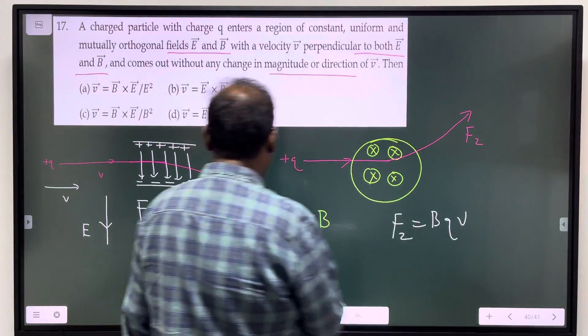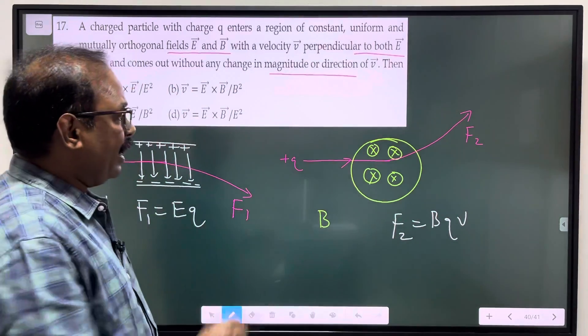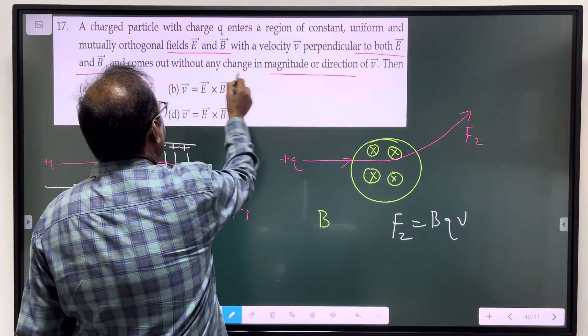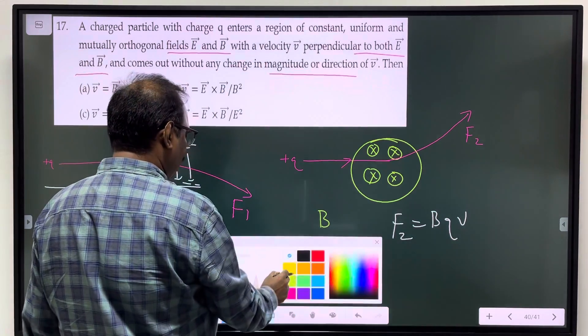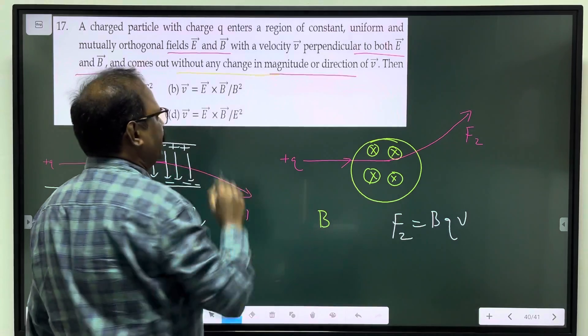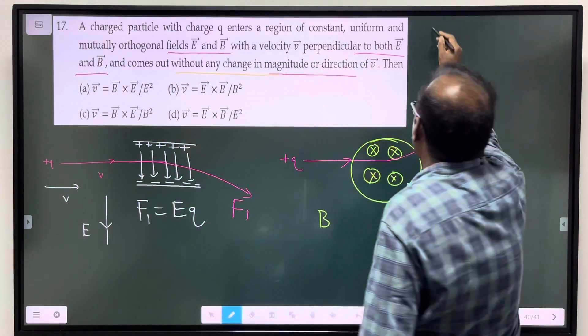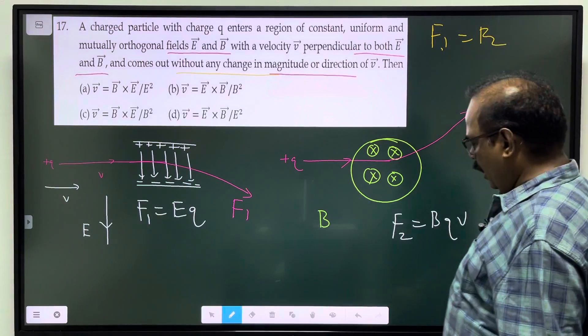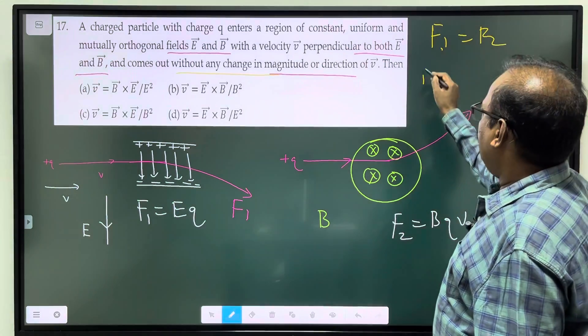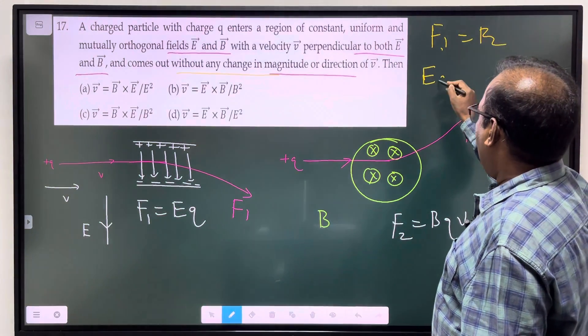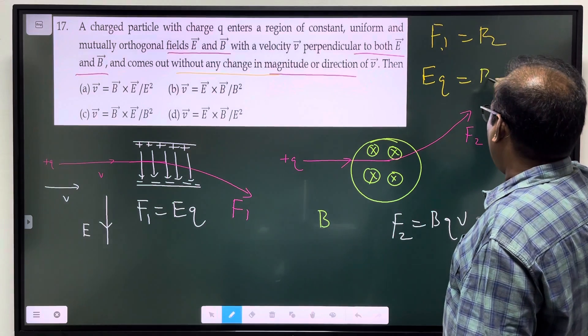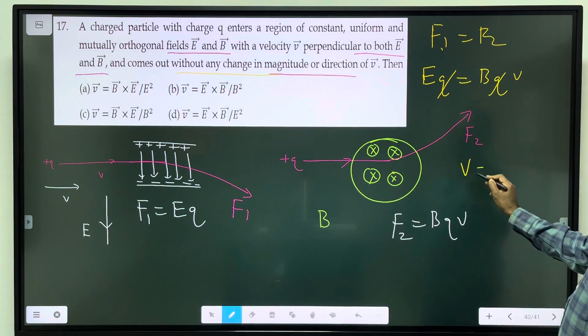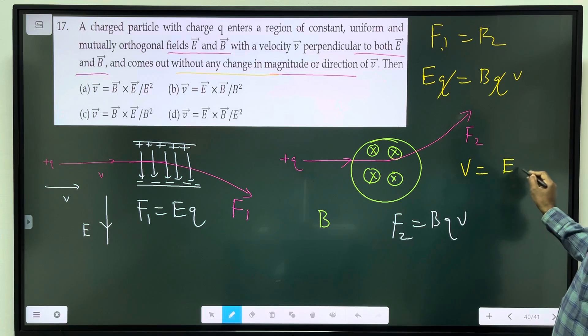Now, for the two forces to be equal and the particle to be undeflected without any change in velocity magnitude, F1 is equal to F2. F1 equal to F2 means Eq and BQV are equal. Q is cancelled, therefore velocity is equal to E by B.